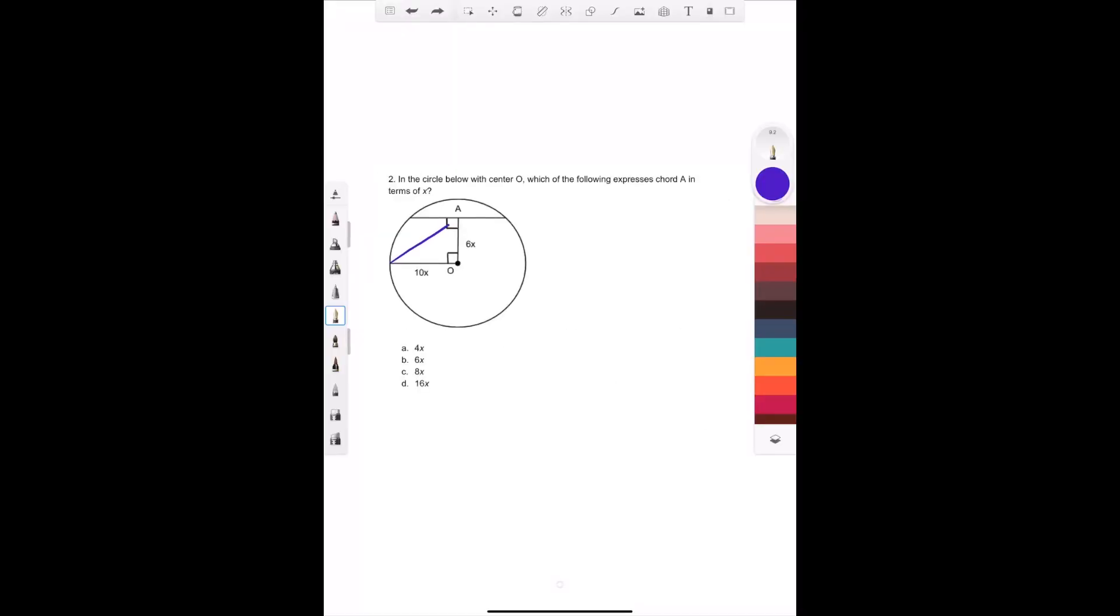When people see this, they immediately think to draw a triangle right here, but what we actually have to do is draw a triangle from the center out, which creates a radius. And this right here is also a radius. So if this is 10x, then we know that this also has to be 10x.